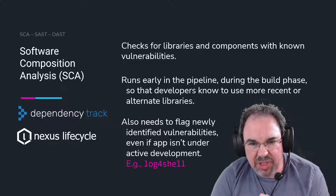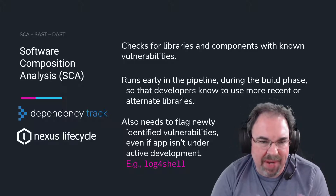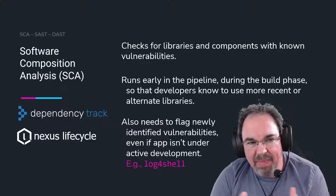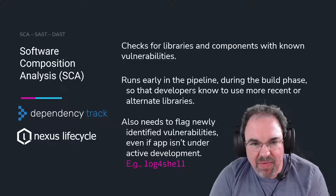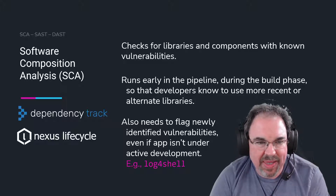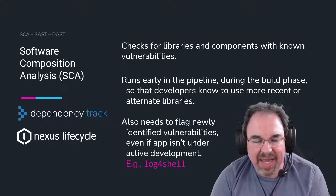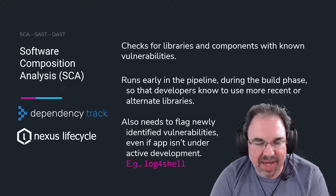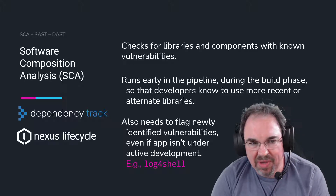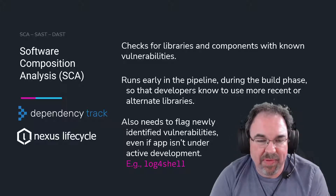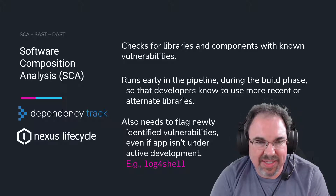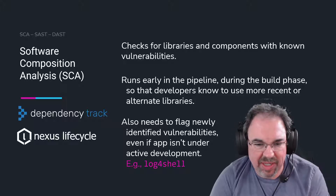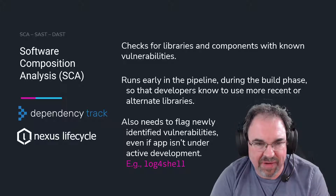These tools generally run early in the pipeline during the build cycle, but they also need to watch what you built with to identify things later in your application lifecycle. We might already be running this in production to identify things that previously we didn't know had a vulnerability, something like the log4j vulnerability, which was known as log4shell.